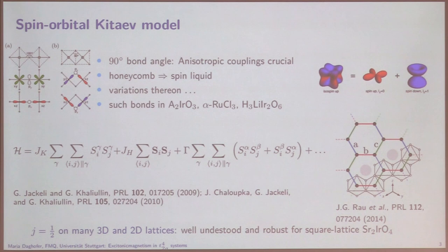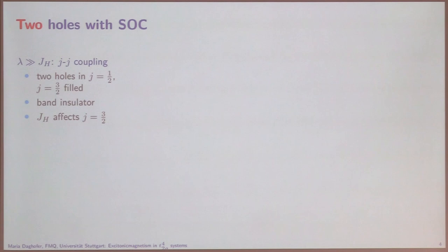Now what I want to do is put two holes. The easiest limit to understand is if spin-orbit coupling is really huge — then the two holes go into the J=1/2, and this is filled, or if there are two holes you could also call it empty, and that is a band insulator.